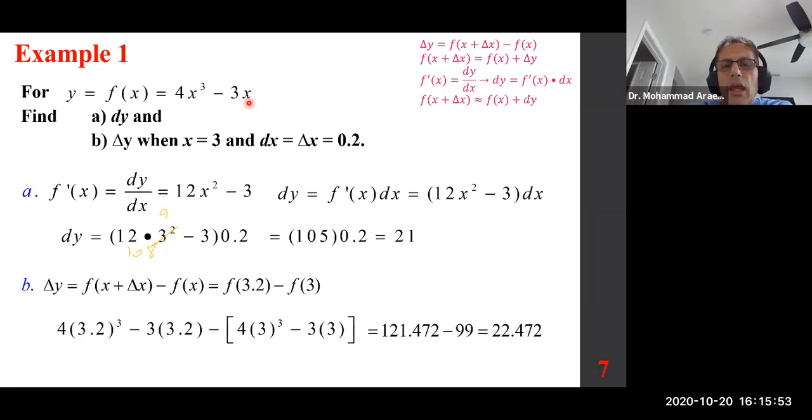Dy is 21. Delta y is 22.472. Now we are not saying they are the same. We are saying they are close. Now, what I want you to notice is delta x or dx is 0.2, and compared to the choice of x is pretty large. Let's say x was 100. Then this would be pretty small compared to x, and you'll see the two are extremely close in that case. The choice of delta x in a matter of comparison to x is fairly large. That's why it's not as close as we wanted to be.